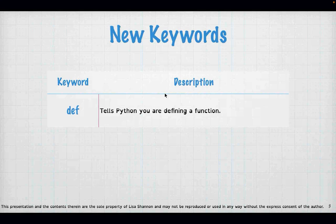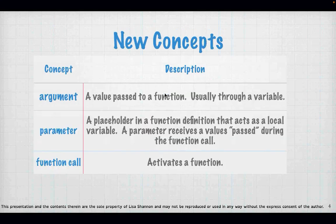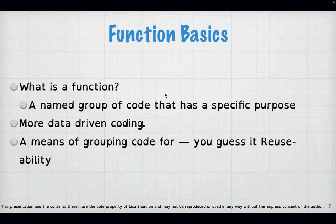The function has to be defined before it's called. We have some new concepts: an argument is a value passed to a function, usually through a variable. A parameter is a placeholder in the function definition — it acts as a local variable inside the function and receives the values passed during the function call. So an argument is in the function call and a parameter is in the function definition. A function call activates the function — it tells Python to run the code inside the function definition.